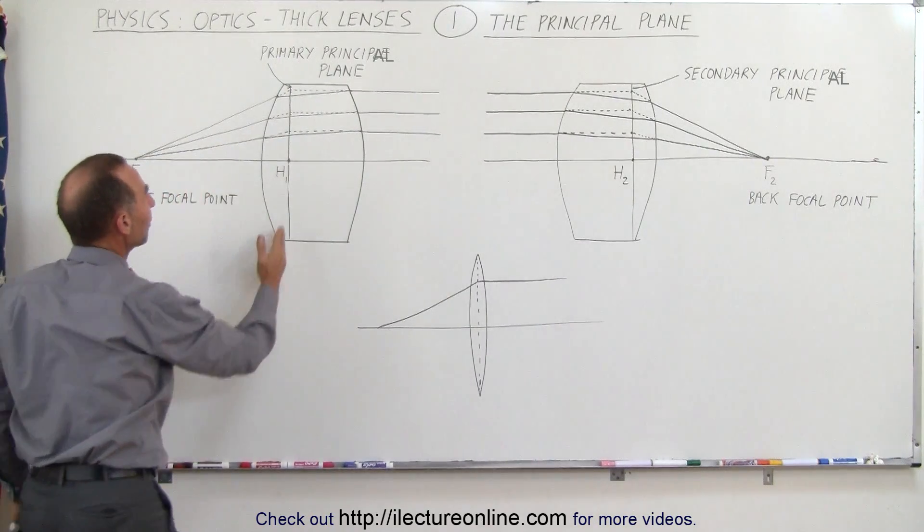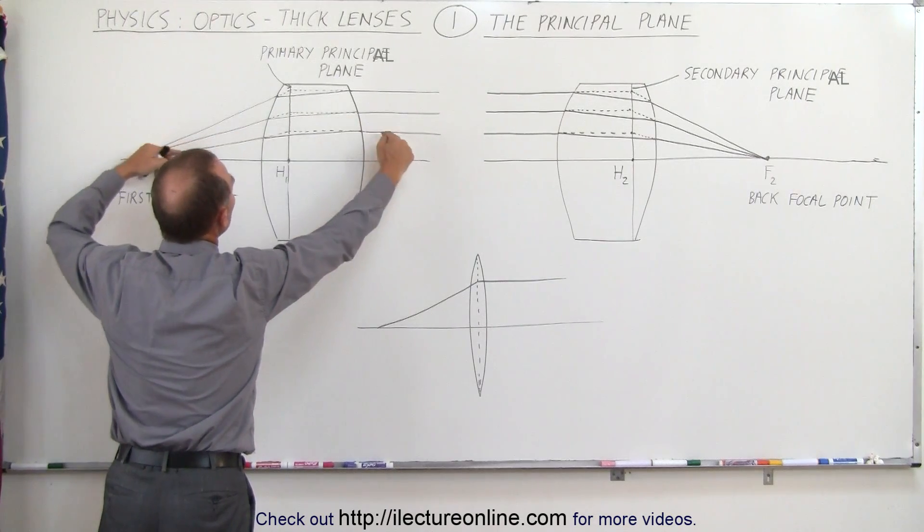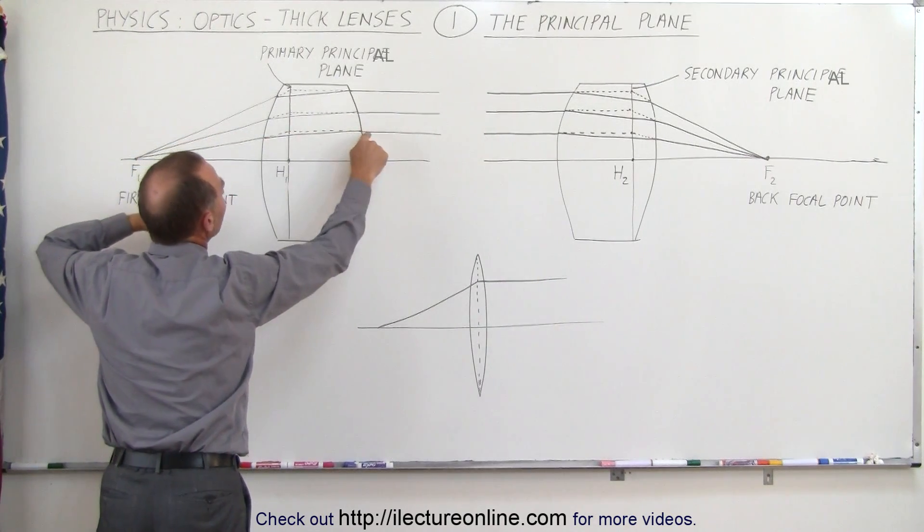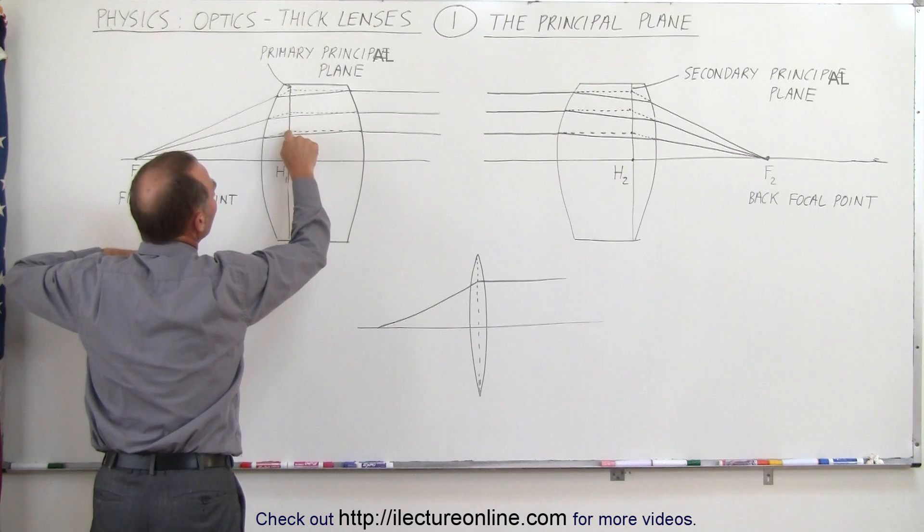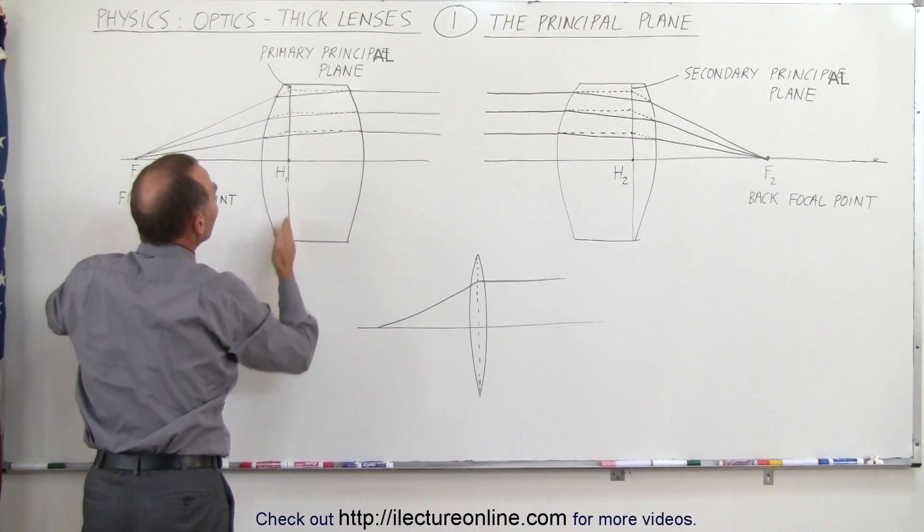We call that place where those two lines meet, if there was no bending on the first boundary and no bending on the second boundary and the bending would be right there where the two meet, that is now considered the primary principal plane.